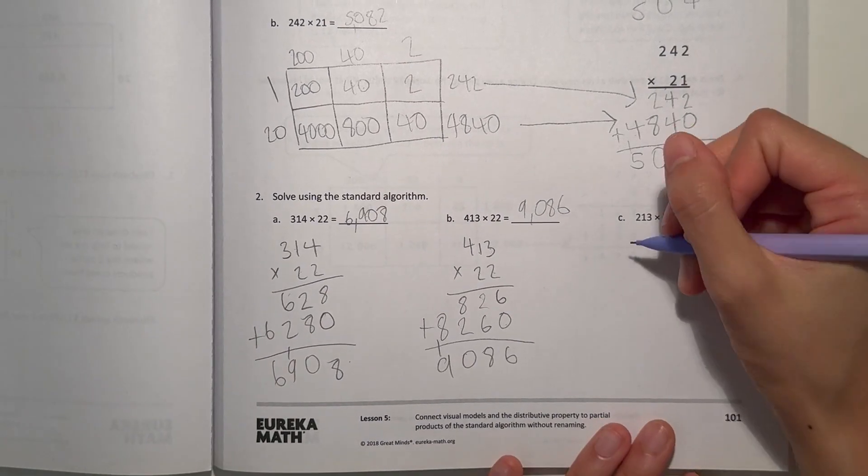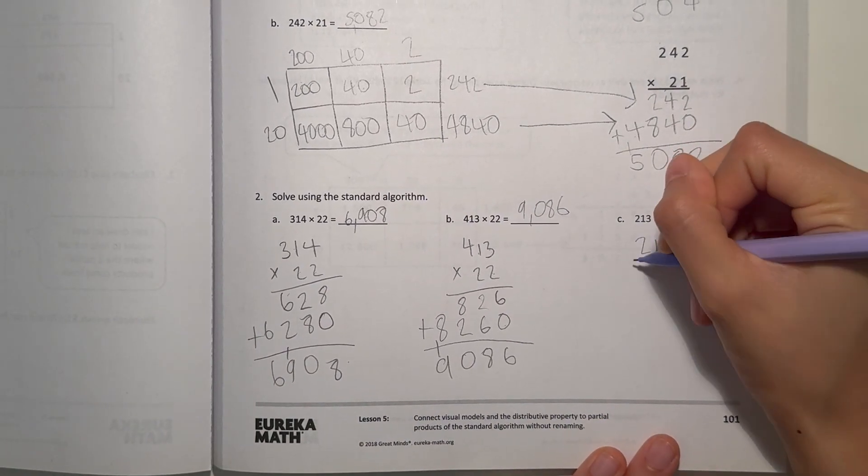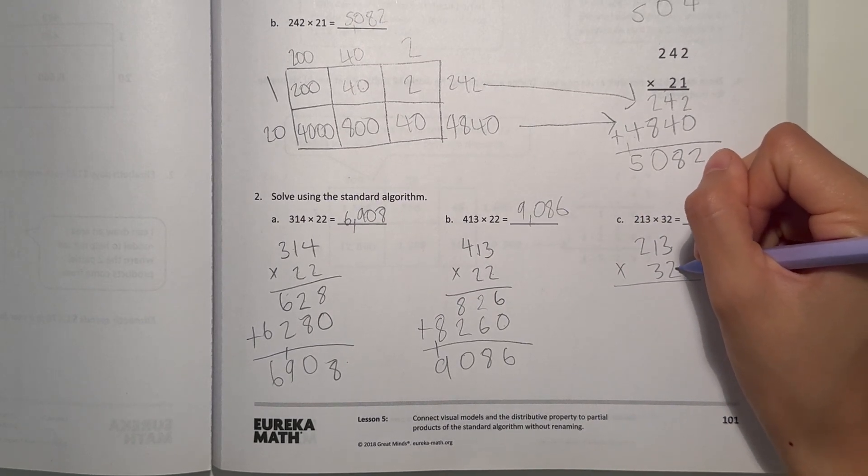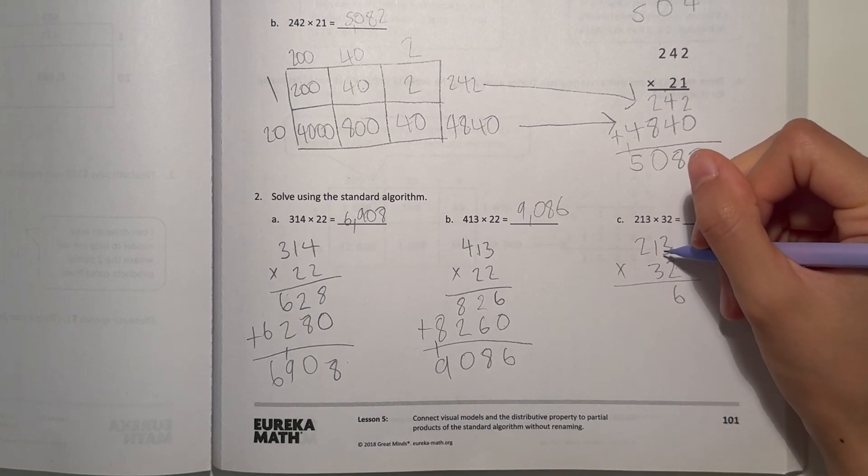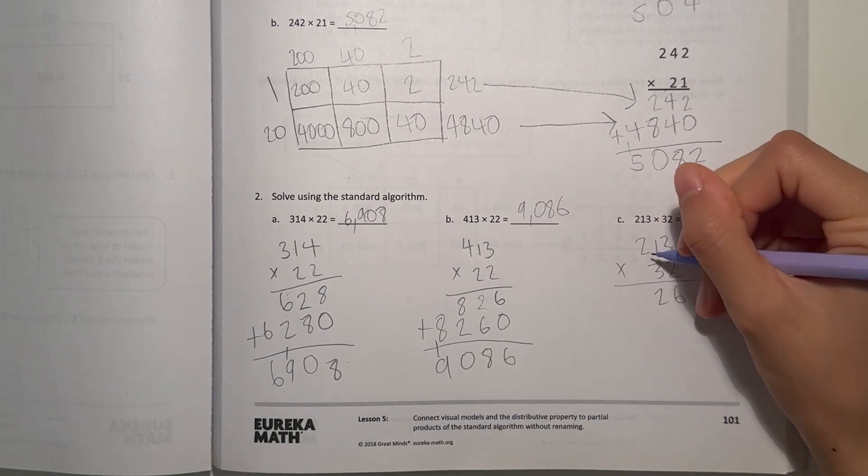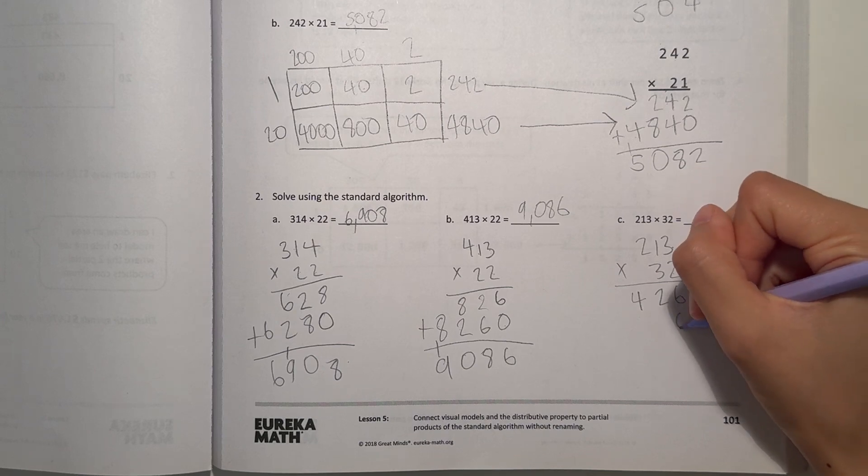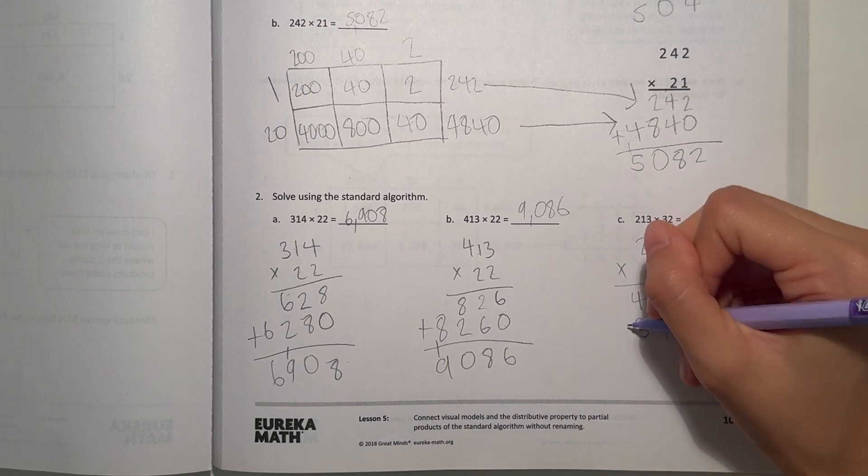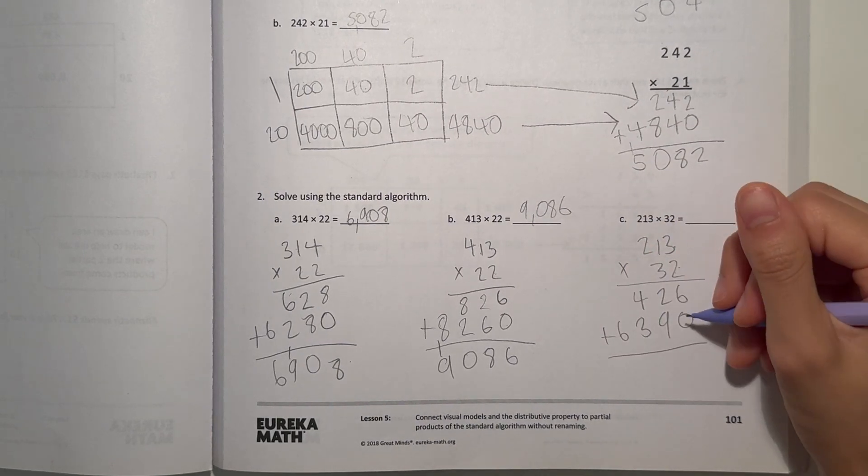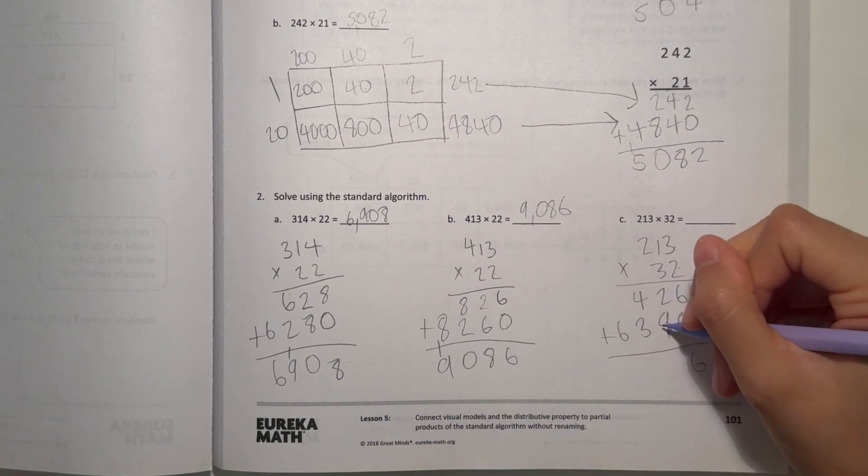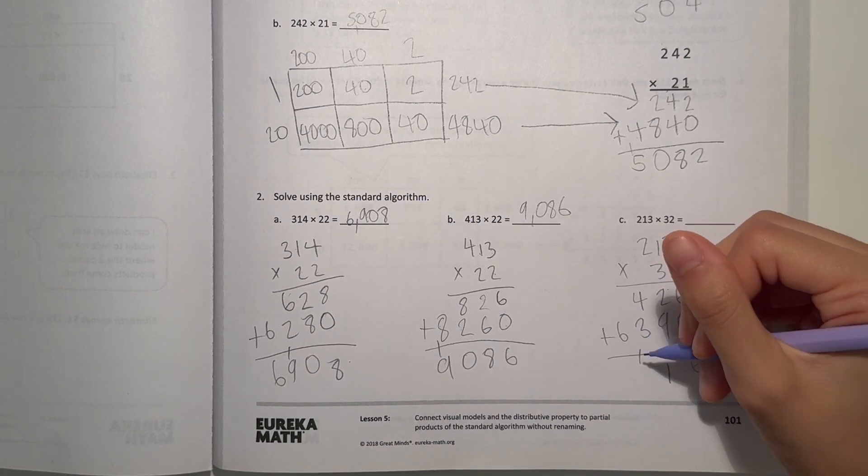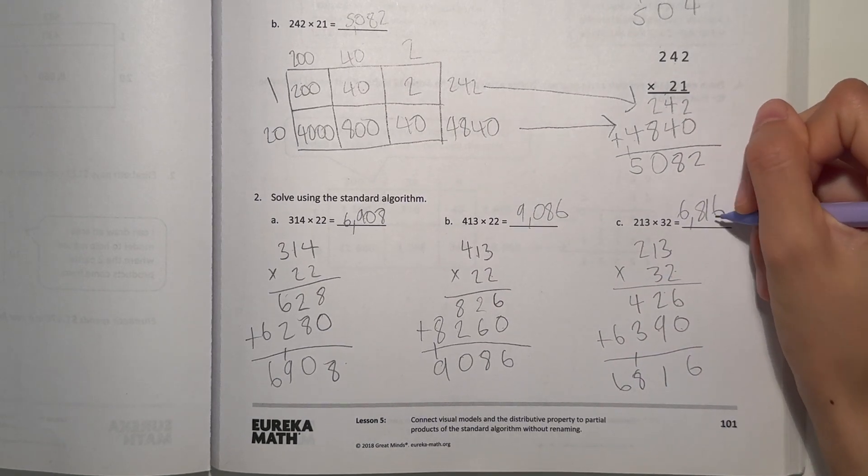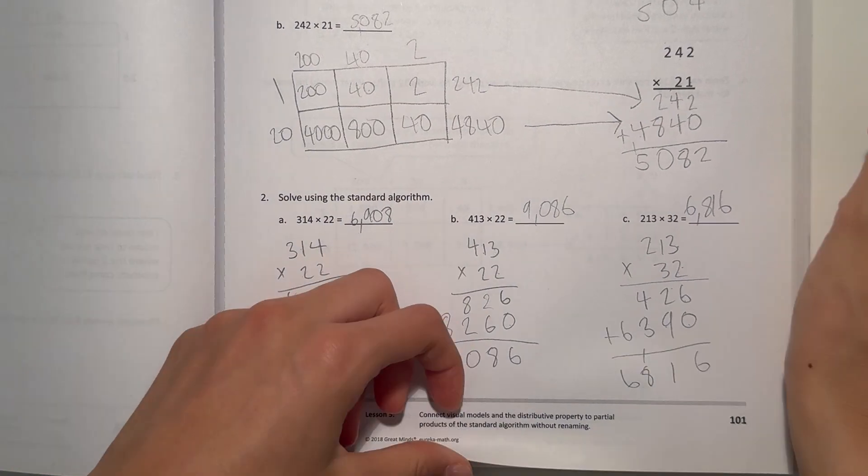Now let's look at C. We have 213 times 32. So let's look at this 2 first. 3 times 2 is 6. 1 times 2 is 2. And 2 times 2 is 4. Now add a 0. 3 times 3 is 9. 1 times 3 is 3. And 2 times 3 is 6. If we add it together, our answer is 6. 4 plus 3 plus 1 is 8. 6. So 6,816.